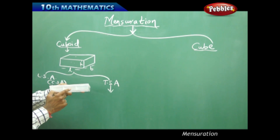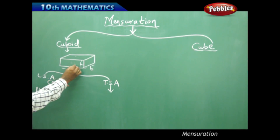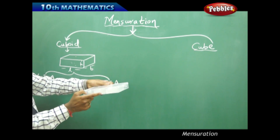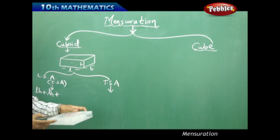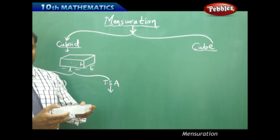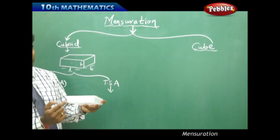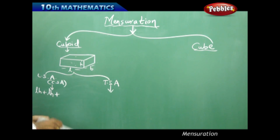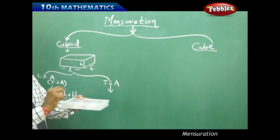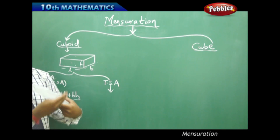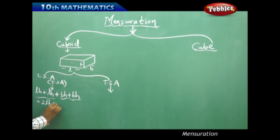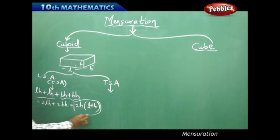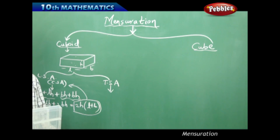To find the lateral surface area, the front face area is L×H, and the opposite side is also L×H. The other two side faces each have area B×H. Adding these together: 2LH plus 2BH gives me 2H(L + B). So the lateral surface area of a cuboid is 2H(L + B).